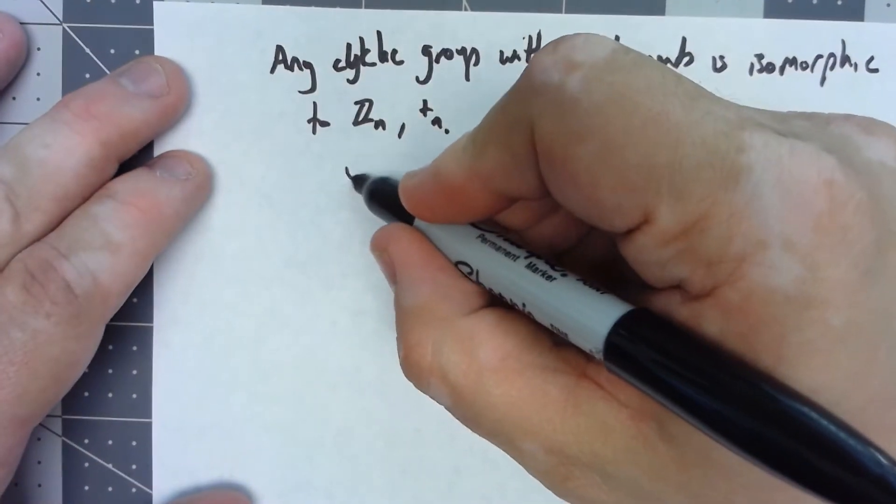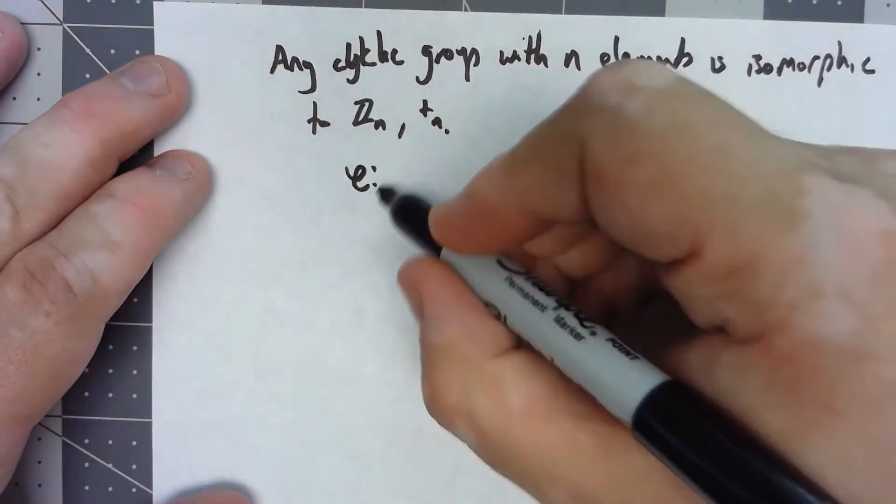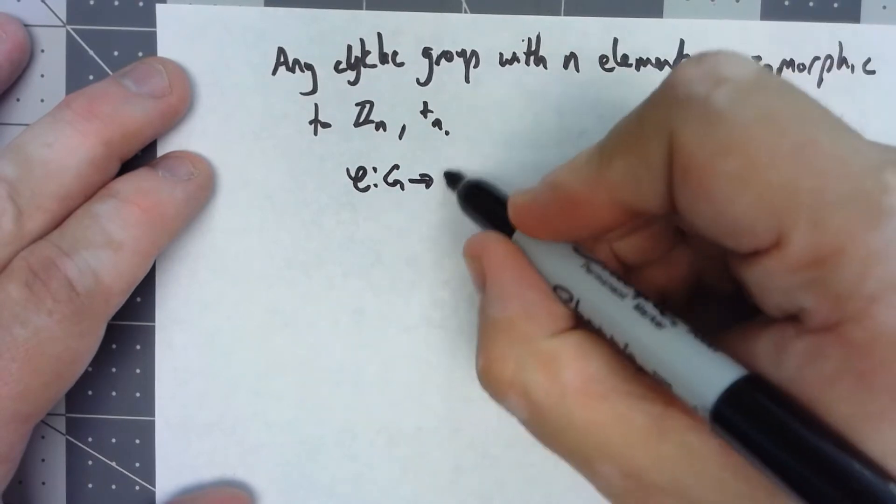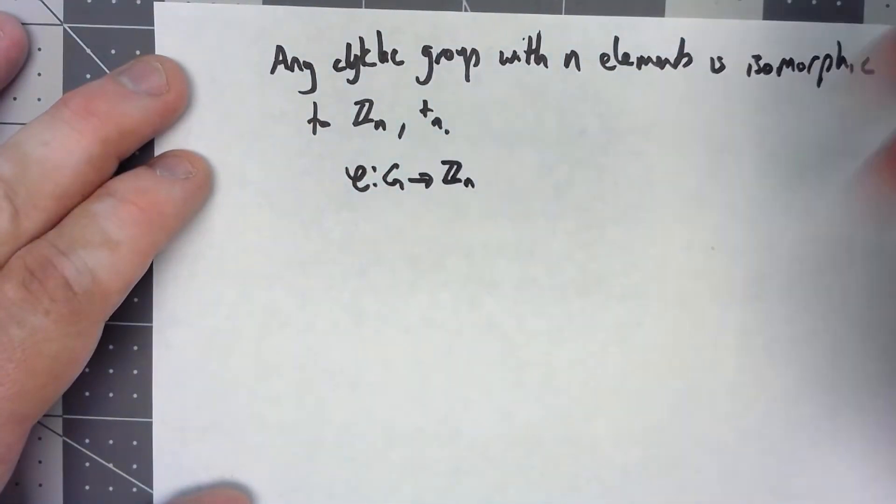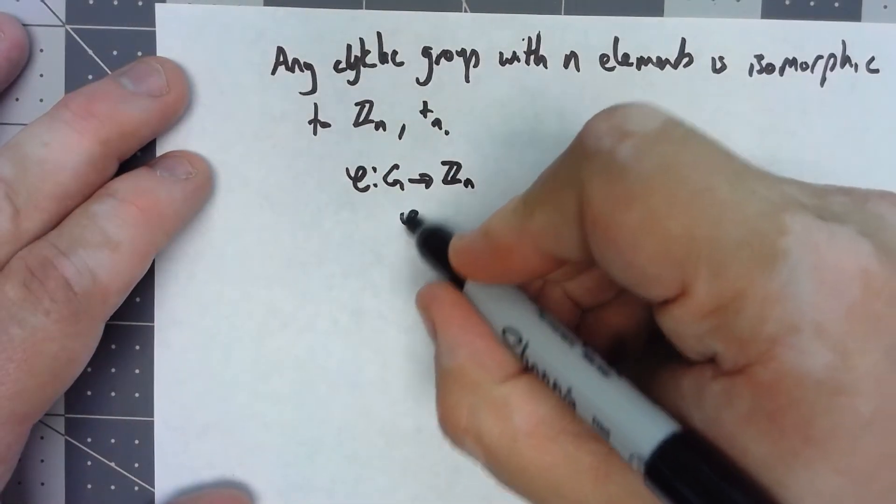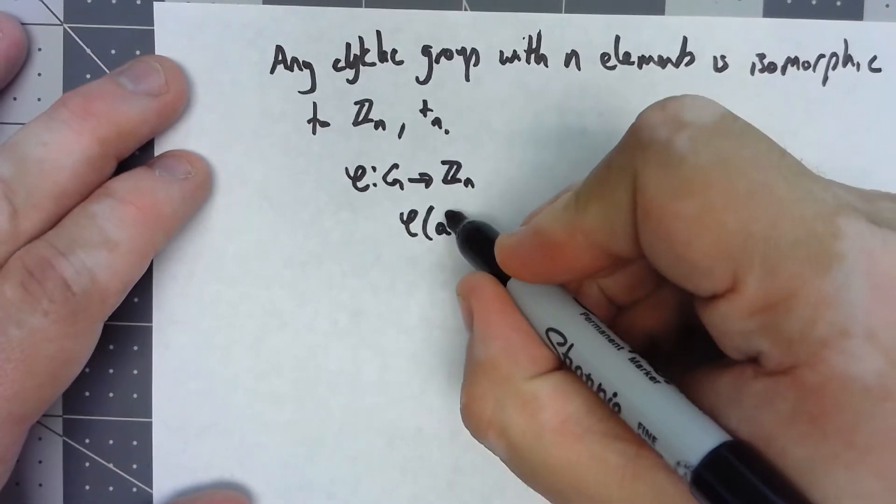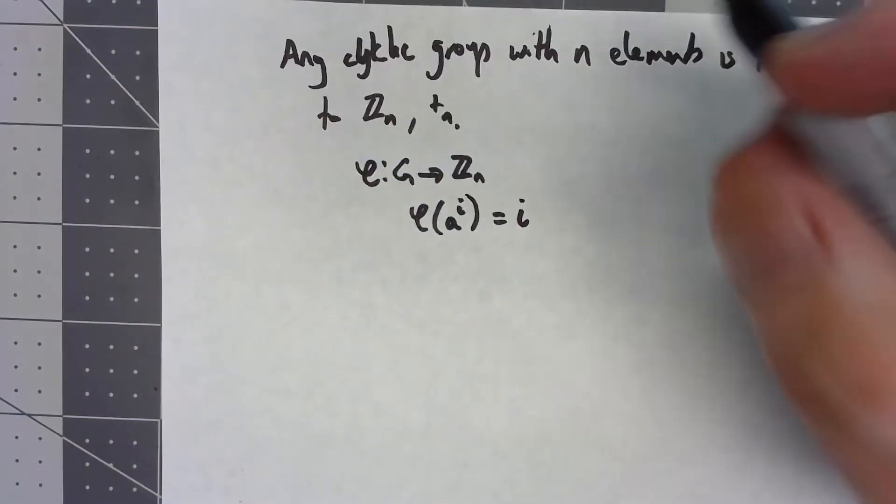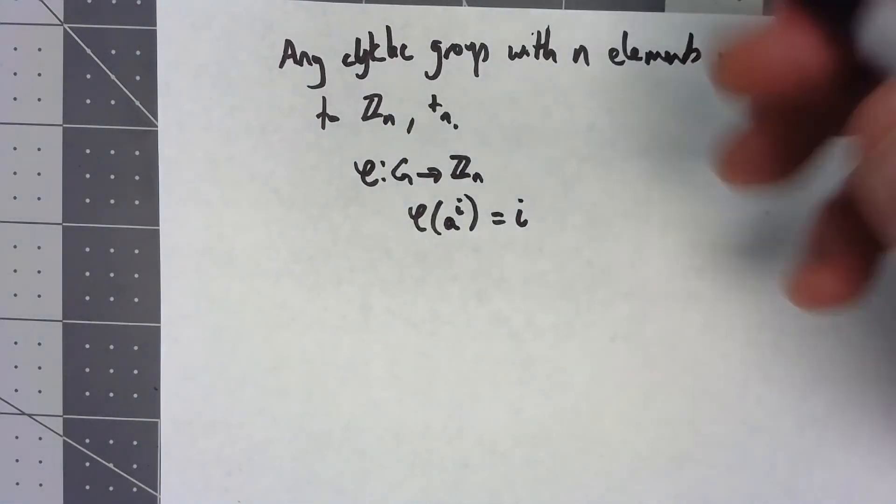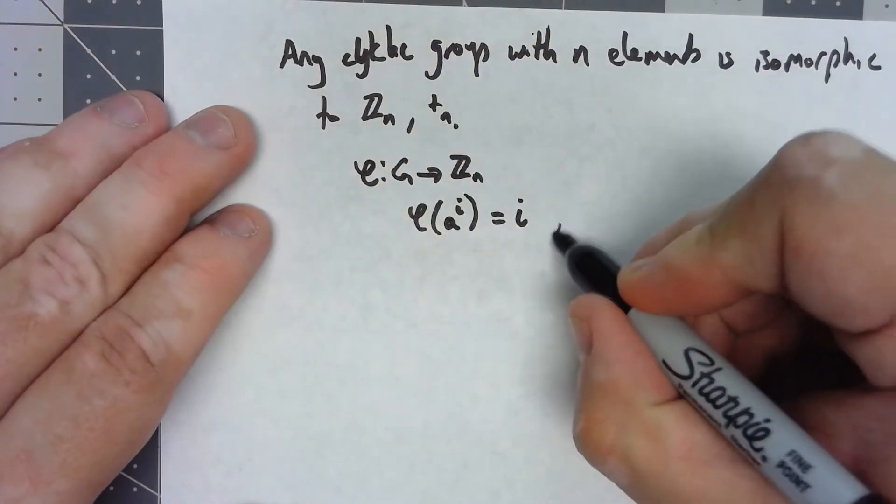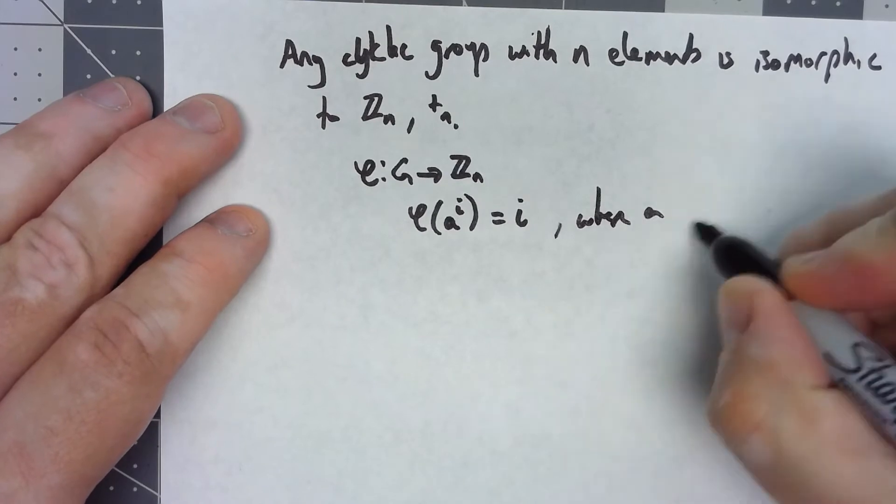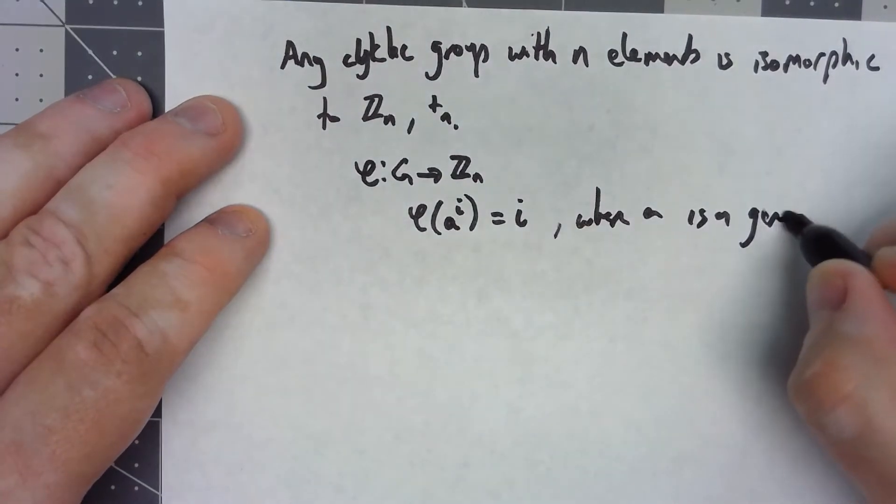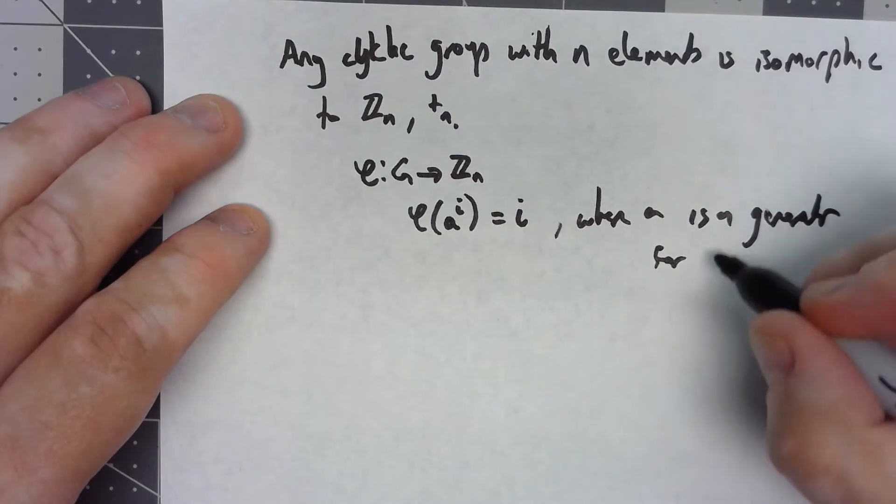Let's go ahead, let's just define my function phi going from G to Zn by phi of A^i equals i. A has to be a generator for the cyclic group.